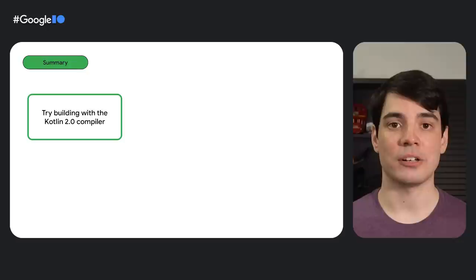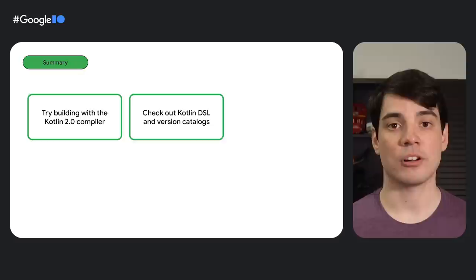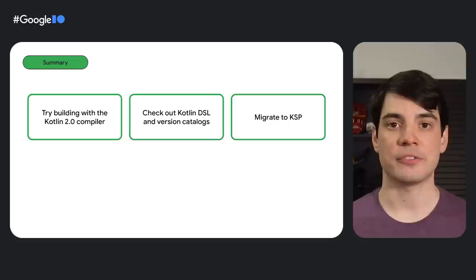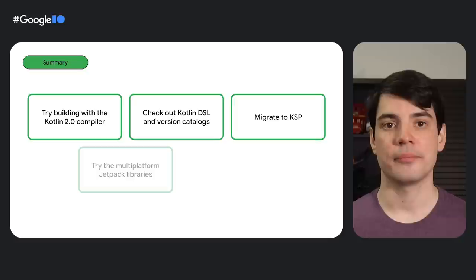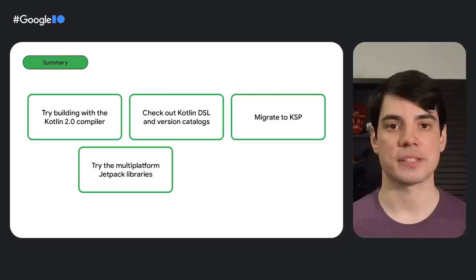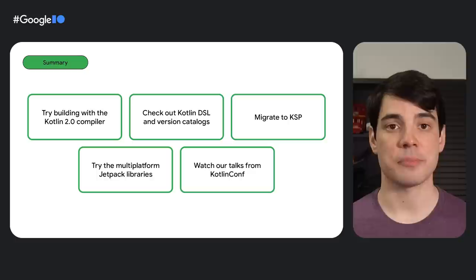That's it for our updates. To recap, here's all the things you can try after this session: As soon as the compiler plugins you use support it, check that the Kotlin 2.0 compiler can build your projects. Give the Gradle Kotlin DSL and version catalogs a go using Android Studio Giraffe. Migrate from KAPT to Kotlin Symbol Processing for libraries that support it. And if you use Kotlin Multiplatform, try our Multiplatform Jetpack libraries. To learn more about what we're doing with Kotlin, you can catch up on our talks from KotlinConf, which cover Multiplatform in Jetpack, Android and Google Workspace, coroutines, and more. Thanks for joining us!